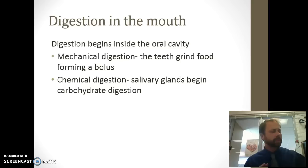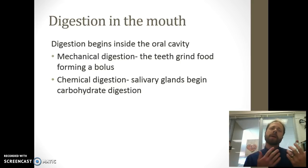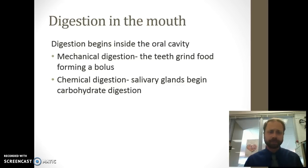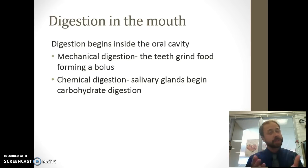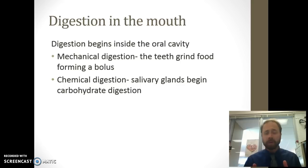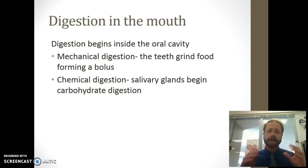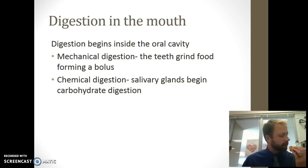Digestion starts in my mouth. With mechanical digestion, my teeth and tongue move and grind all that food around, creating a wad of food called the bolus. It's not just mechanical digestion that occurs, but also chemical digestion. Salivary glands aid in that digestion — that breakdown of that exquisite pizza.